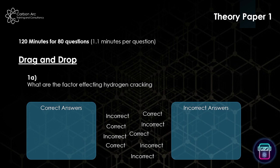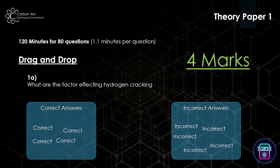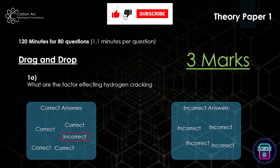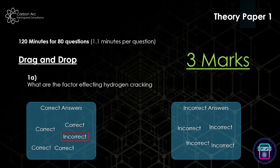There'll also be drag and drop questions. Here we've got a question asking what effect is a factor of hydrogen cracking. You'll have two boxes on the computer or iPad, and you have to drag all the correct answers into one box and all the incorrect answers into the other. If you get all four marks right, you get all four marks. But there is a negative marking alert: if you put an incorrect answer into the correct box, you'll lose a mark. If you put two incorrect answers in, you lose two marks — even if all other answers are correct.